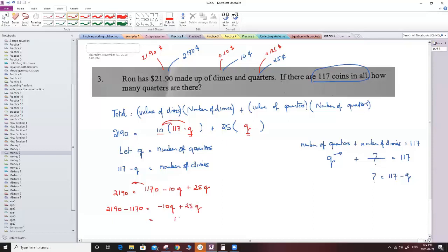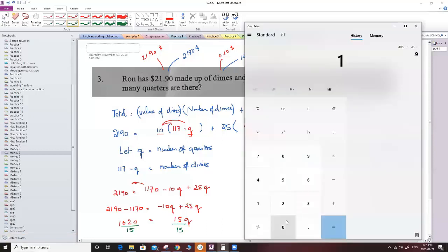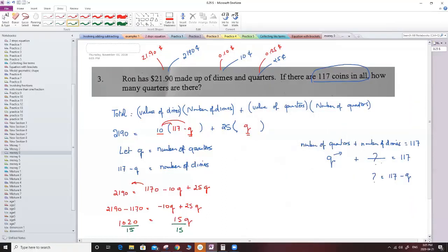Now when I combine the like terms, it will give me 15q, and here 0 minus 0 equals 0, 9 minus 7 equals 2, 1 minus 1 equals 0, 2 minus 1 equals 1. Now to isolate q, I need to divide by 15, so I have to do the same thing on the other side. So here I'm going to use a calculator and say 1,020 divided by 15, I will have 68. So that means to finalize my equation, I'm going to say 68 equal to q, and 68 this is the number of quarters.